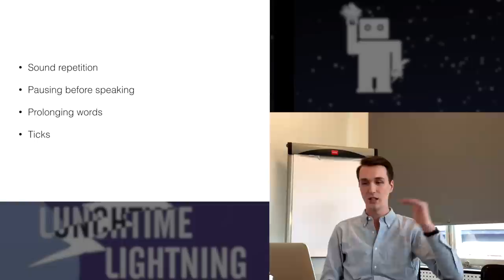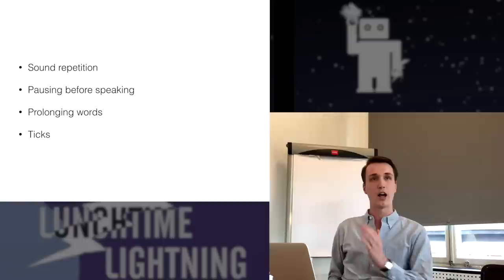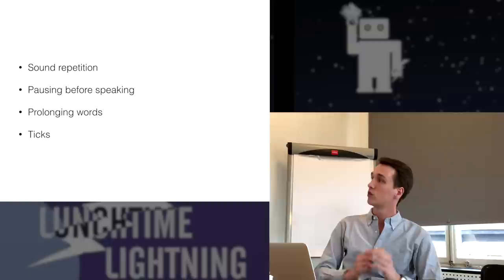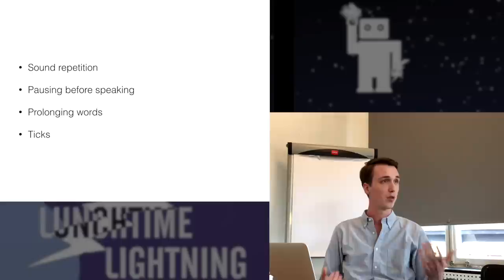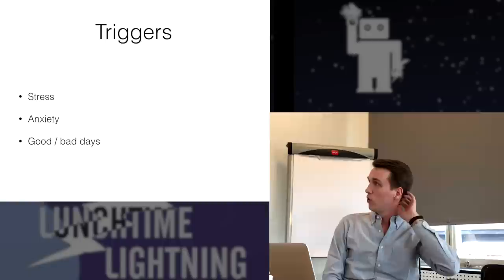So what is stammering? Stammering usually is categorized into four categories which is sound repetition, pausing before speaking, prolonging words or texts, and tics. Repetition means that if you say long, you say L-L-L-L long. Pausing before speaking, the person freezes, can't really figure out what they're trying to say and then words come out. Prolonging words is when you say long with multiple O's, or tics when people make weird faces trying to force something out, like raising eyebrows or waving with hands.